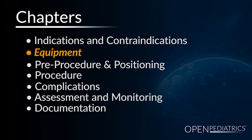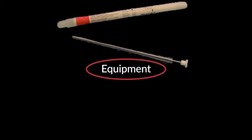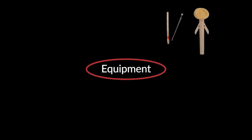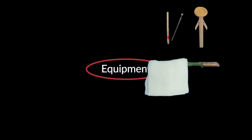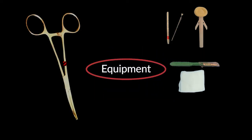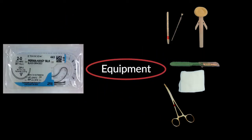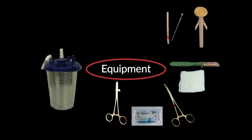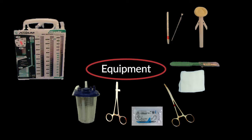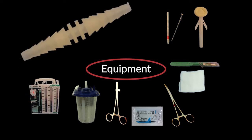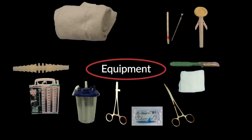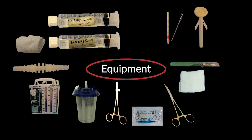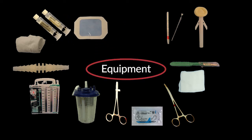Equipment: surgical chest tube, antimicrobial scrub, scalpel, sterile gauze, Kelly clamp, sutures, needle driver, suction source, chest tube collection device, male-to-male connector, shoulder roll, systemic and local pain medications, dressing materials, and monitoring equipment.